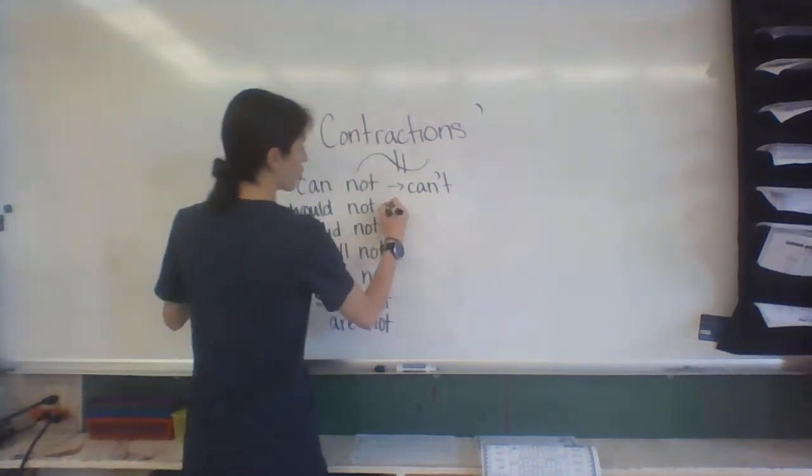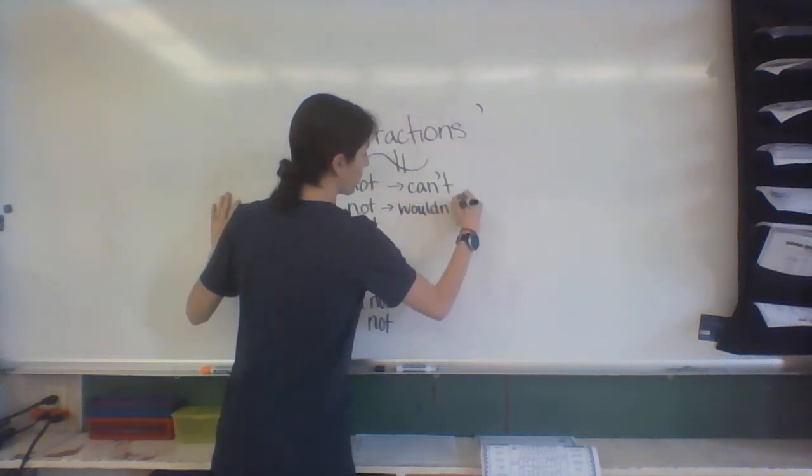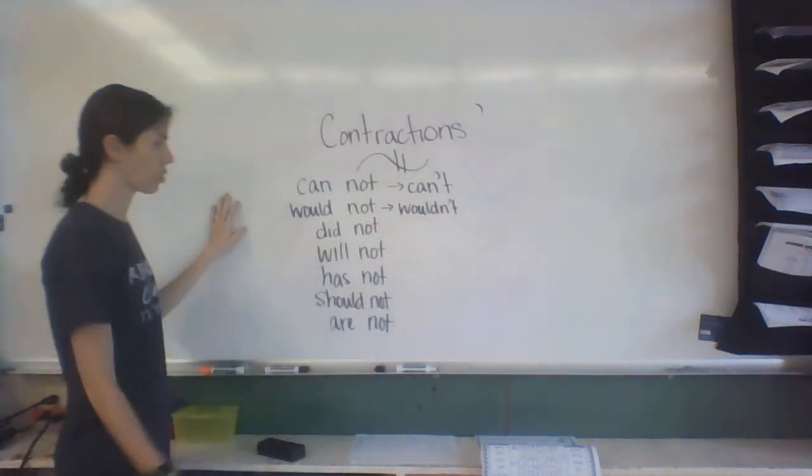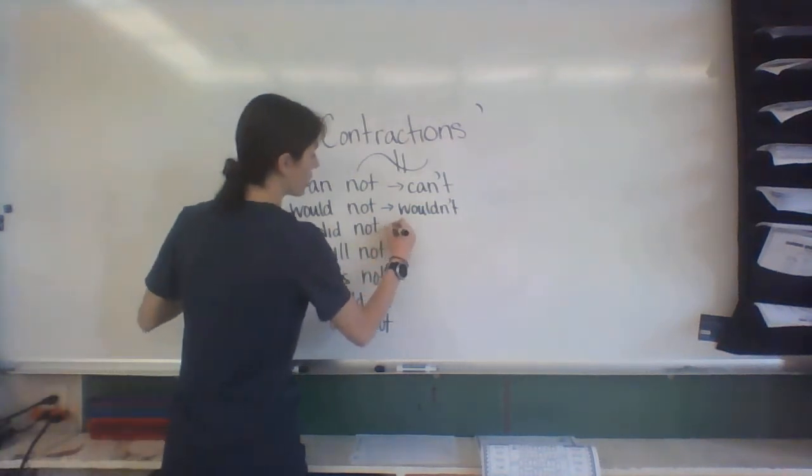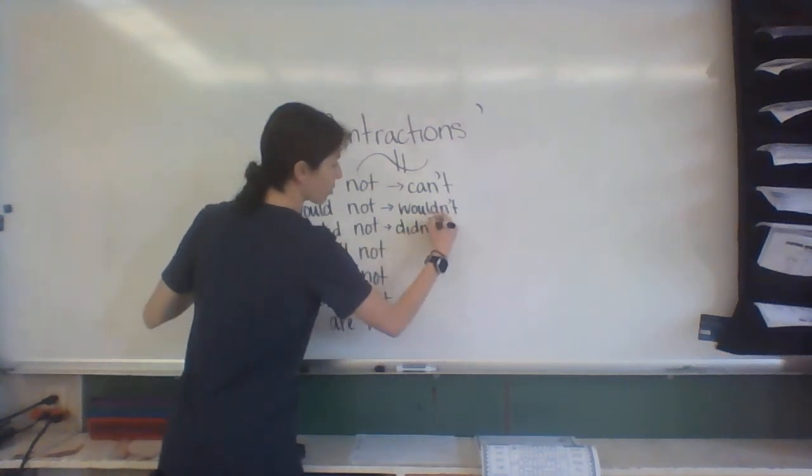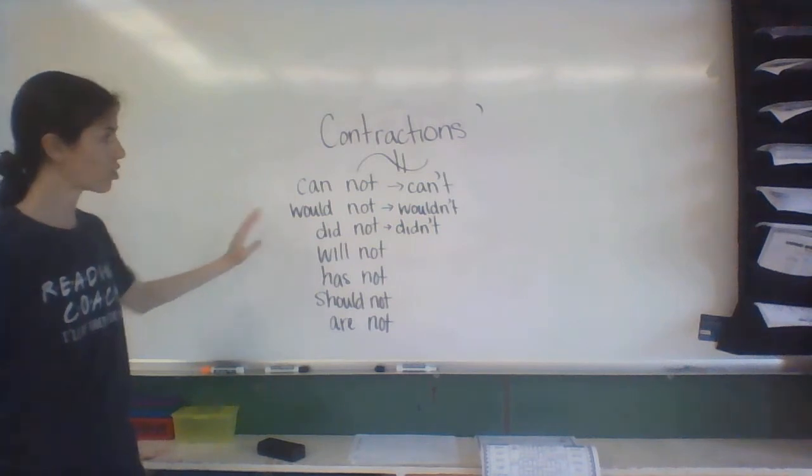'She would not go to the store'—'she wouldn't go to the store.' 'I did not go to the store'—instead of the O, I turned it to an apostrophe and added a T for 'didn't.' Make sure you always get that apostrophe in.